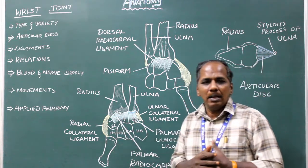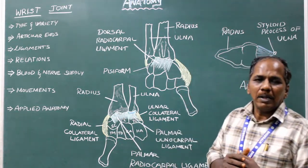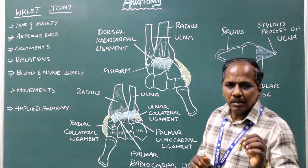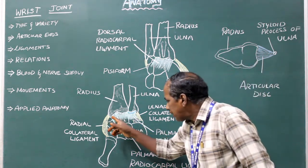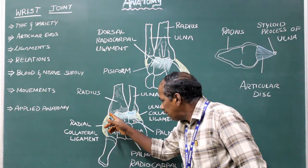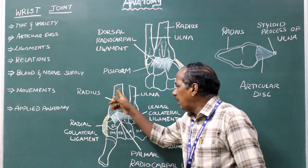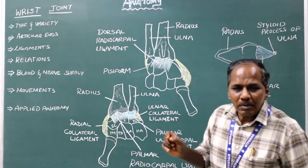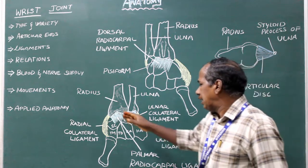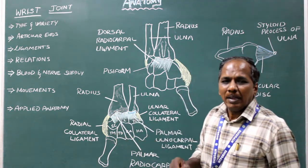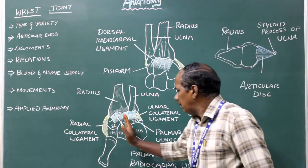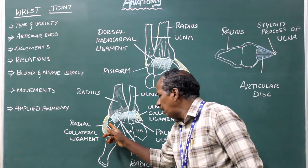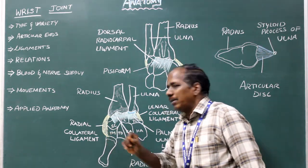Number 2: Radial collateral ligament or lateral ligament of the wrist joint. Attachment: proximally it is attached to the styloid process of the radius. Distally it is attached to the lateral surface of scaphoid and trapezium.